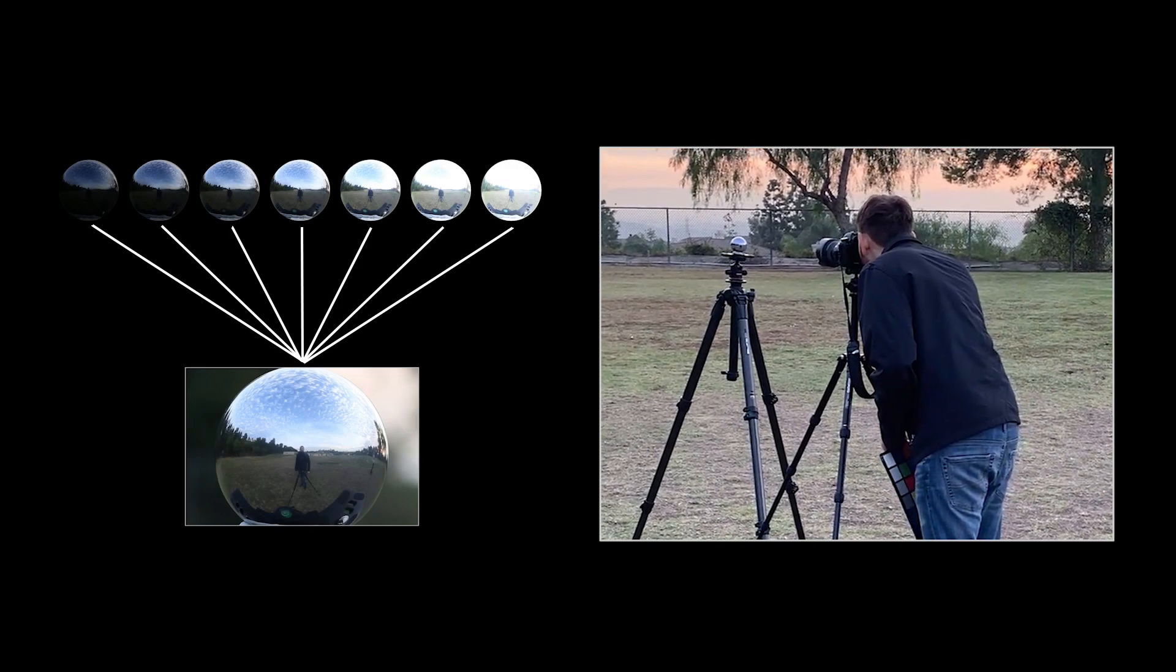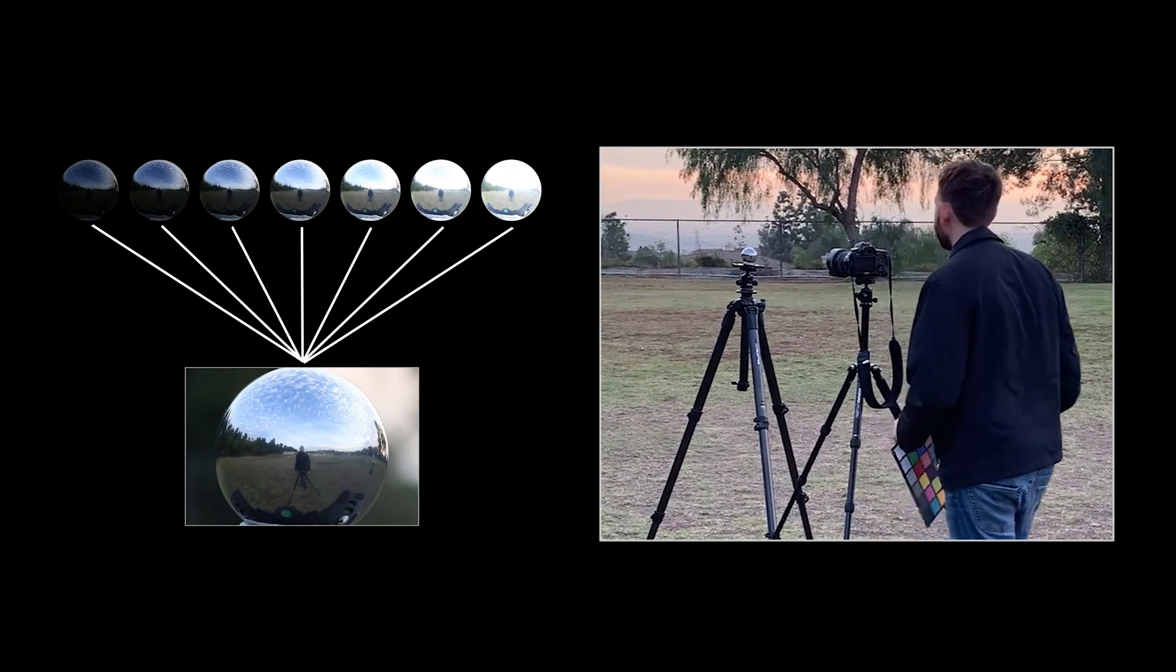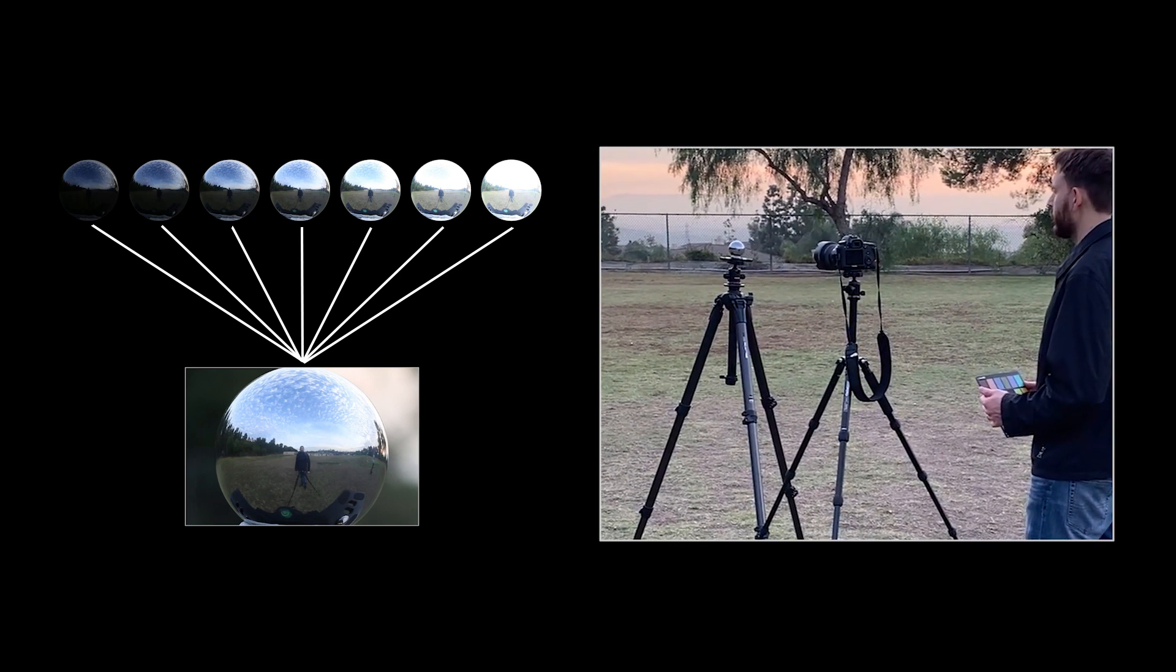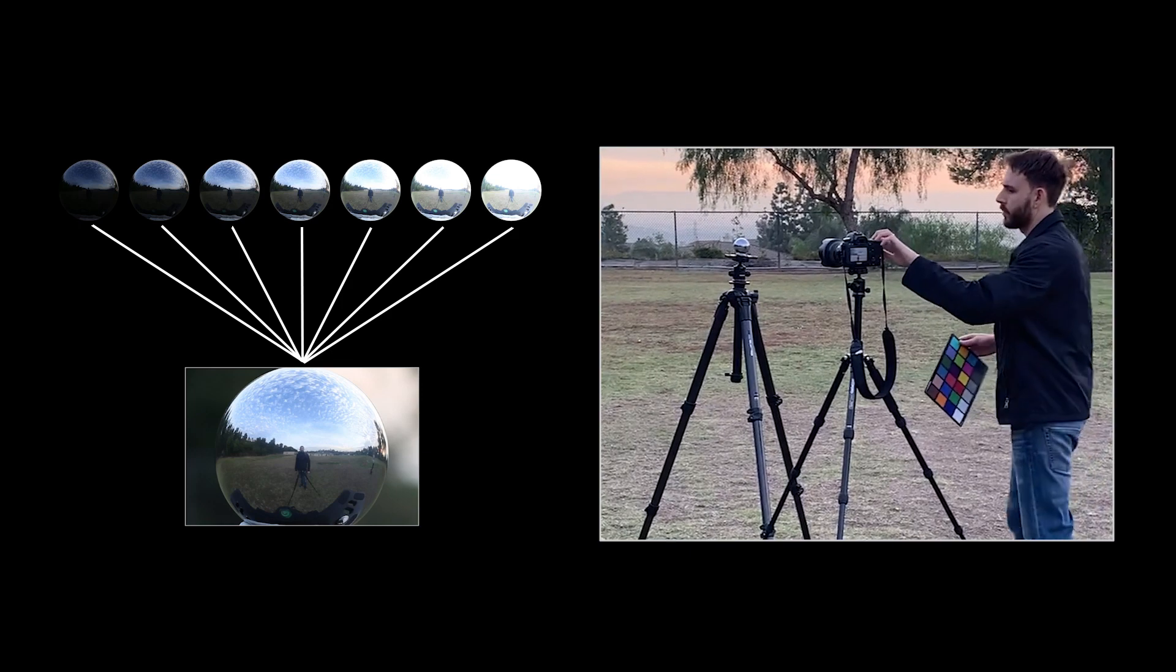Traditionally, to render and composite synthetic objects into real-world scenes, you first need to measure the real-world illumination. You could use HDR panoramic photography techniques like photographing a mirror ball.